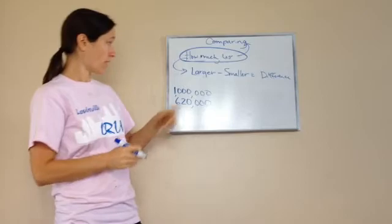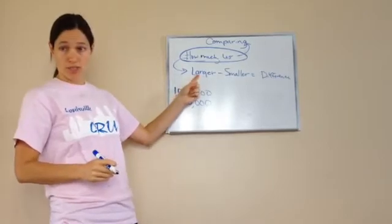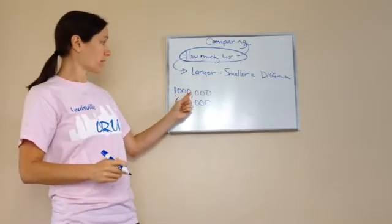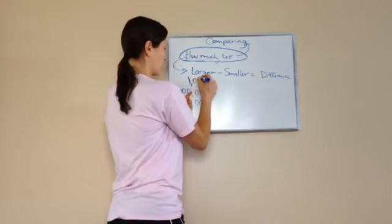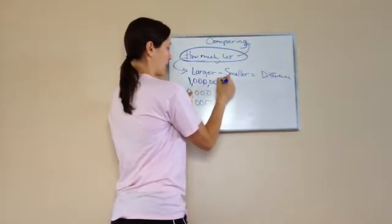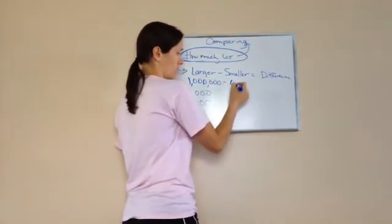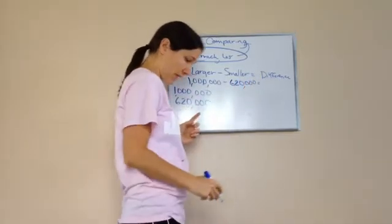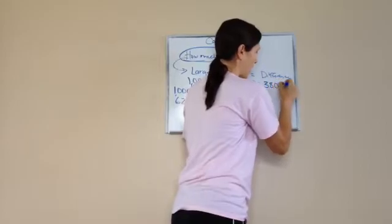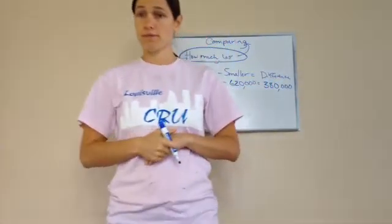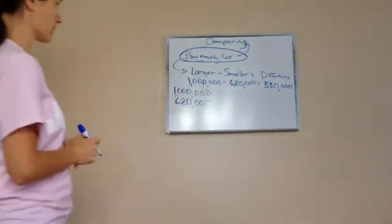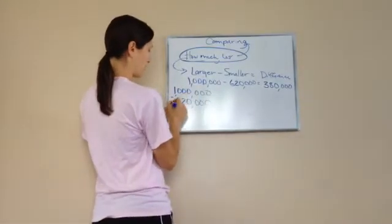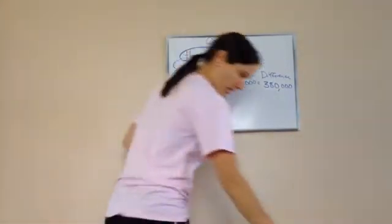So how do I answer this equation? The larger number, which is 1 million. And the smaller number, which is 620,000. Very good. And the difference would be, I'm just going to go and write it, 380,000. So you see how we do this? I would actually subtract these two and get my answer.